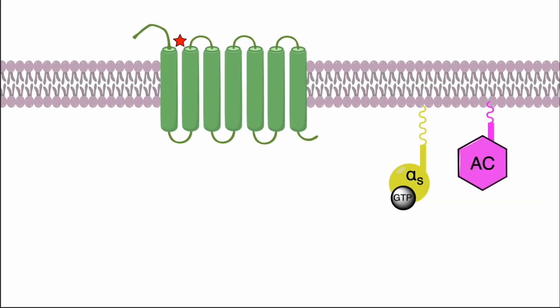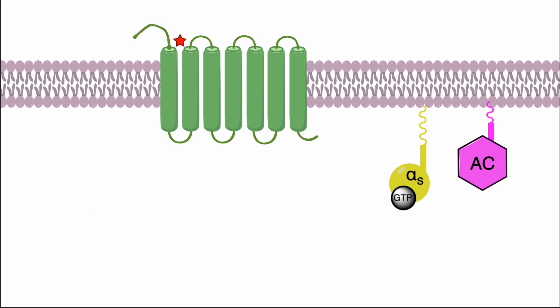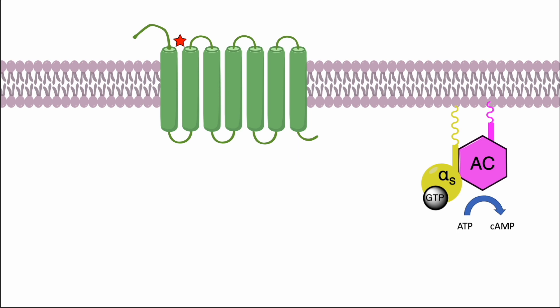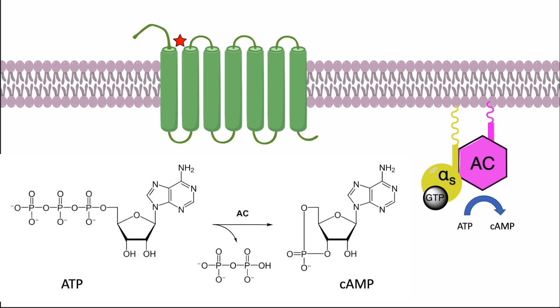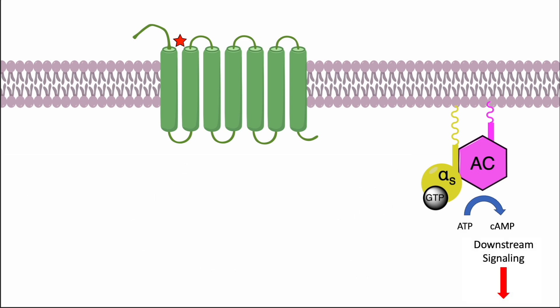There are several different G-proteins, which are recognized by different types of receptors. Some of the activated subunits from these G-proteins have an inhibitory effect, while others have a stimulatory effect. For example, the alpha-S subunit of the G-S protein binds to a membrane-bound enzyme called adenylate cyclase. Upon binding, the enzyme catalyzes the synthesis of cyclic AMP, also known as cAMP.